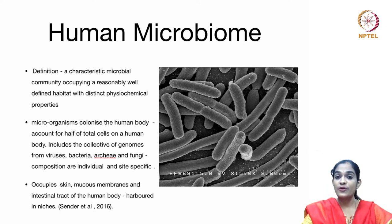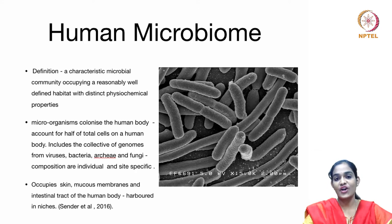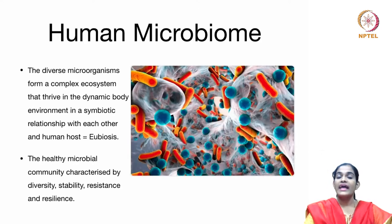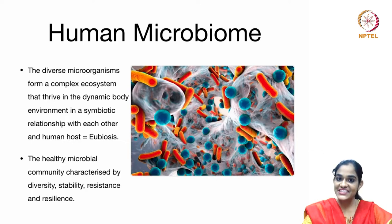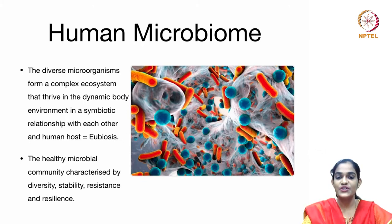The terms microbiota and microbiome are used interchangeably. While the microbiota represents the type of microorganisms present in a specific environment, the microbiome includes the microorganisms along with their genomes inside a particular ecological niche. Each microbial flora has a characteristic set of microorganisms. The diverse microorganisms form a complex ecosystem that thrives in an ever-changing environment. They interact with each other and the human host in a symbiotic or mutually beneficial relationship — a harmonious state called eubiosis.